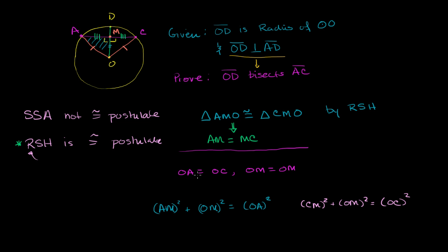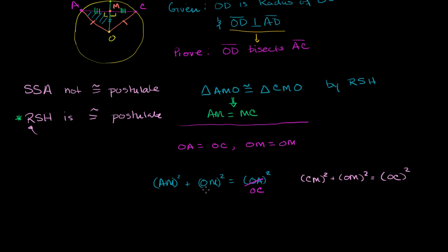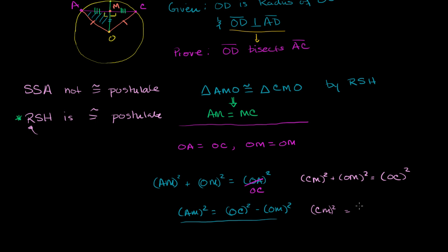We know that OA is equal to OC, so we can replace OA² with OC² in the first equation. Then, subtracting OM² from both sides of each equation, we get AM² = OC² − OM² and CM² = OC² − OM².